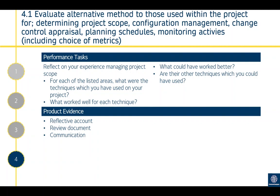For example, a statement on configuration management where you evaluate the methods used would tick that box, and a separate statement on change control where you evaluate those methods would tick that box. But not until you've got evidence for each list item can you close off that criteria. For each listed area, reflect on what techniques you used in your project, what worked well, what could have worked better, what you would have done differently, and whether there are any other techniques you could have used and how they might have impacted your work. Product evidence is largely going to be a reflective account, but could also include review documents or communications.